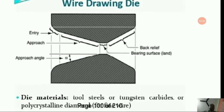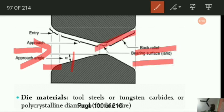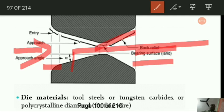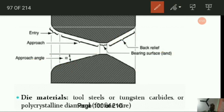In the wire drawing setup, there is an entry path, an approach angle (alpha), a back relief, and a bearing surface. A very small orifice is present between the dies, and the rod enters this portion coming out as a wire.